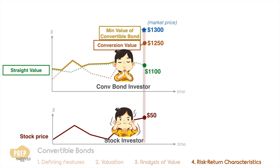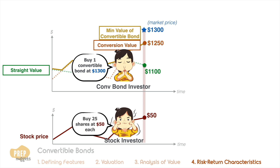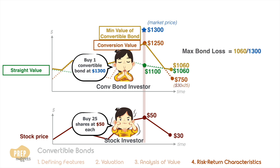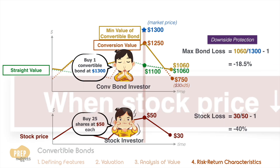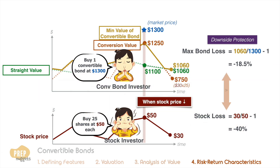Back to our example: the investor buys the convertible bond at $1,300, while the stock investor buys 25 shares at $50 each. One year later, the share price falls to $30, so the conversion value of the bond drops to $750. Let's say the straight value of the bond falls to $1,060. Given that the minimum value of the convertible bond is the maximum of the two values, its value is minimally $1,060. The bond investor has lost at most 18.5%, while the investor in stocks would have lost 40%. Here we see the downside protection of the convertible bond at play. When the stock's price falls, the returns on convertible bonds exceed those of the stock because the convertible bond's price has a floor equal to its straight bond value.